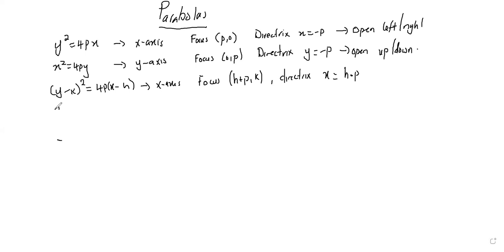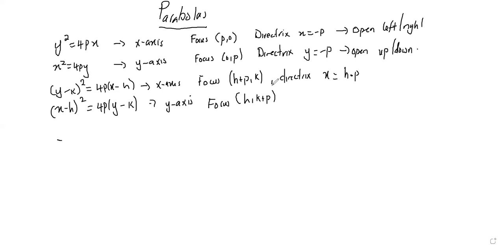For the form (x-h)² = 4p(y-k), the parabola is on the y-axis, meaning it opens up or down. The focus is going to be (h, k+p) and the directrix is y = k-p. So that's for the parabola.